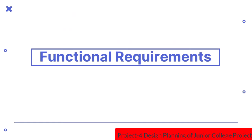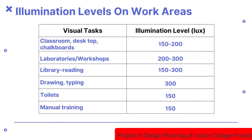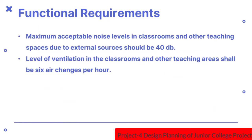Let us discuss the functional requirements of school buildings. Illumination levels for classrooms on desktops and chalkboards should be 150 to 200 lux. The maximum acceptable noise level in classrooms and other teaching spaces due to external sources should be 40 decibels. The level of ventilation in classrooms and other teaching areas shall be 6 air changes per hour.